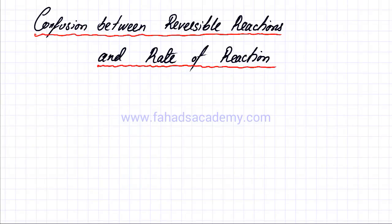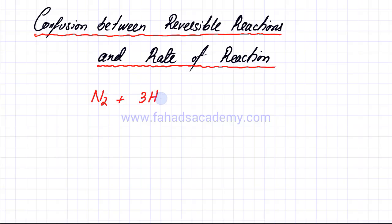In this video lecture we're going to discuss some confusions that arise when we talk about reversible reactions, the Le Chatelier principle, and the rate of reaction. Let's take an example: nitrogen reacting with 3H₂, producing two molecules of NH₃. This is a reversible reaction and they are all gaseous.